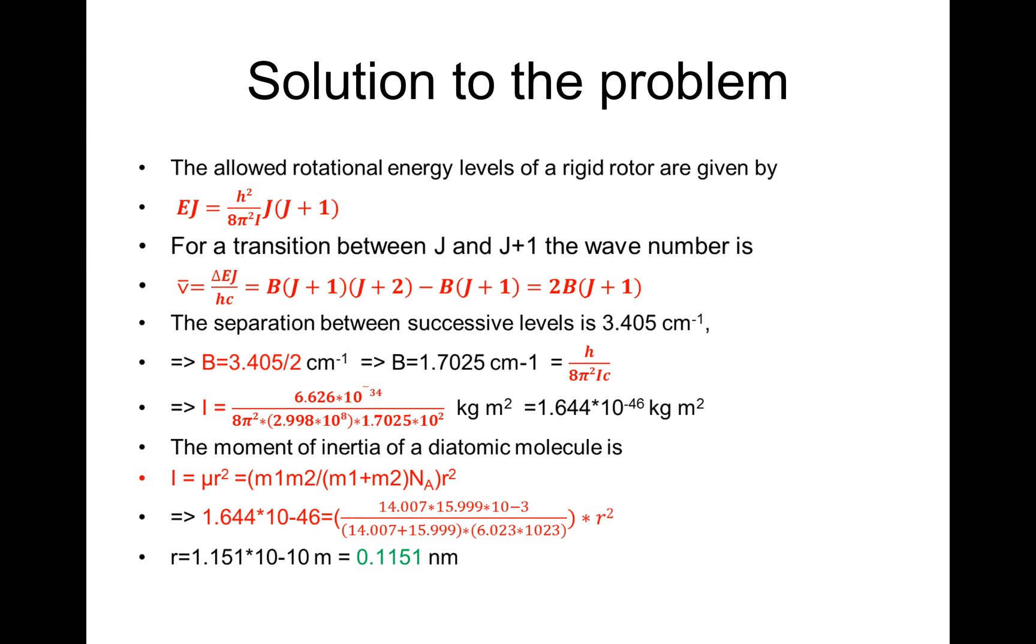Now, how do we do it? The allowed rotational energy levels of a rigid rotor are given by E_J = h²/(8π²I)*J*(J+1). For a transition between J and J+1, the wave number ν̄ is ΔE_J/(hc), which is equal to B*(J+1)*(J+2) - B*J*(J+1), which is equal to 2B*(J+1).